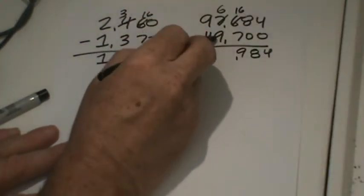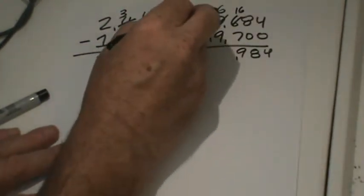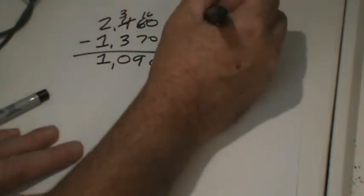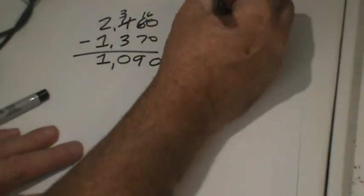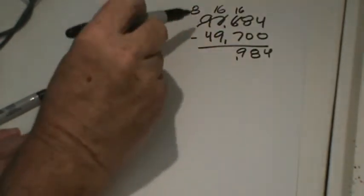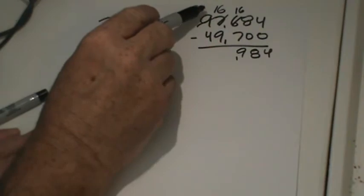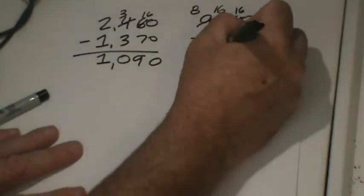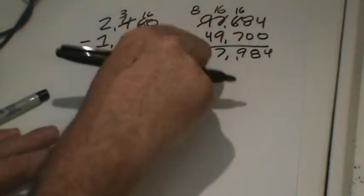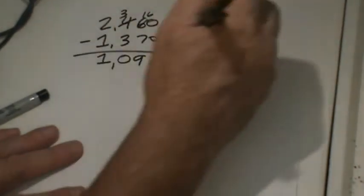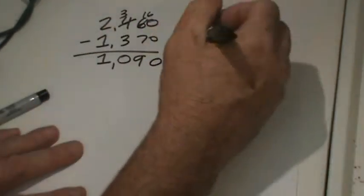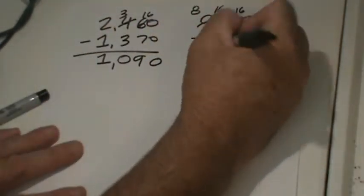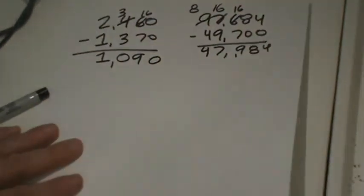Can't subtract nine thousands from six thousands. So we're going to take ten thousands away from this place value and put that over there. Now it's 16 thousands. 16 thousands minus nine thousands is seven thousands. And eight ten-thousands minus four ten-thousands is four ten-thousands.